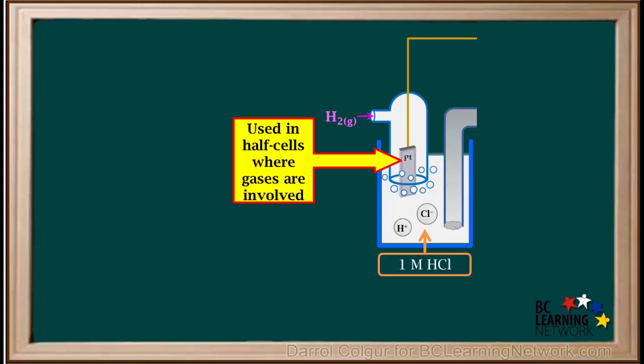Inert metals like platinum are often used in half cells where gases are involved. Gases and aqueous ions need a solid surface to react with each other on.